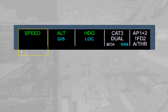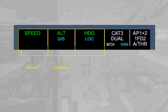The first column is dedicated to thrust — this is where the autothrust modes appear. The second column displays the vertical modes of the autopilot and flight directors. The third column displays the lateral modes of the autopilot and flight directors.